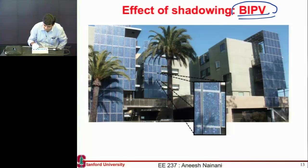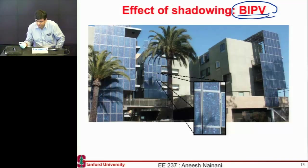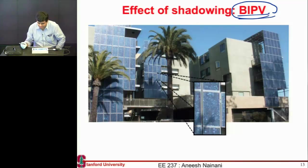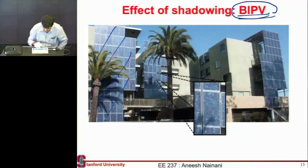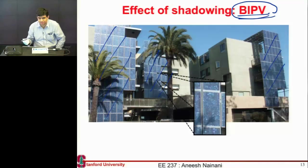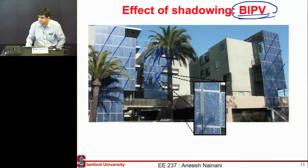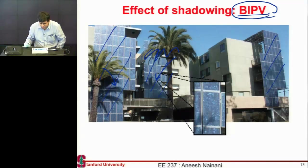BIPV makes a lot of sense for places with a lot of new construction — you put solar while you're building. Here's an example: a building in the valley where panels are placed on the south-facing facade. You can clearly see trees placed nearby that will cast a shadow on top of these panels, which makes shading an especially important issue for BIPV systems.